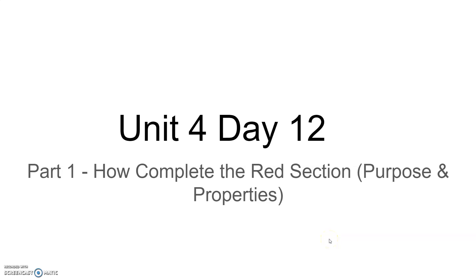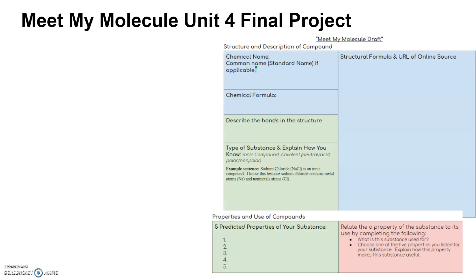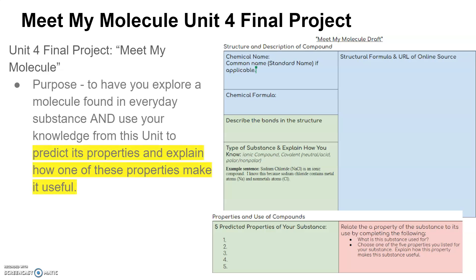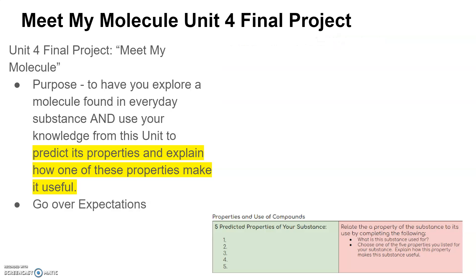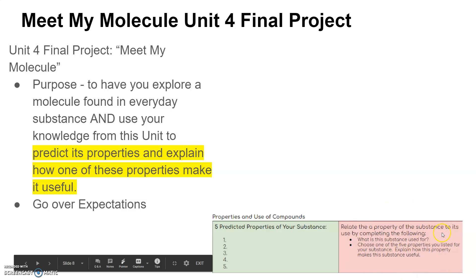Welcome to Unit 4, Day 12, where we're going to discuss how to complete the red section of your Unit 4 project. One of the purposes of your Unit 4 project is to predict the properties of your chemical and explain how these properties make it useful. What we're going to do here is go over the expectations for how we're going to complete this red section where you will fulfill this purpose.